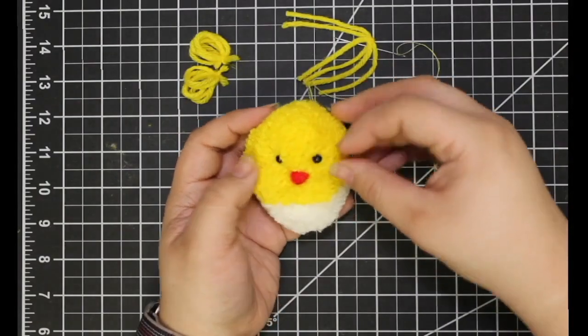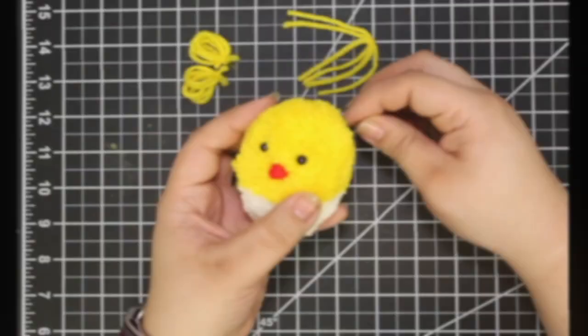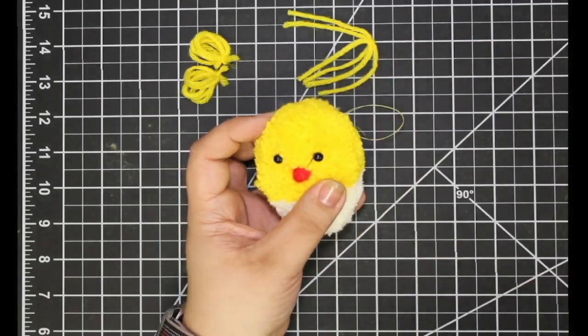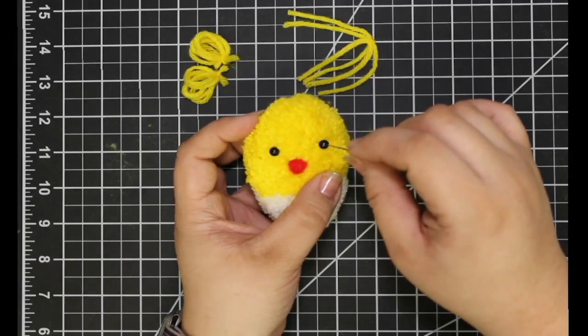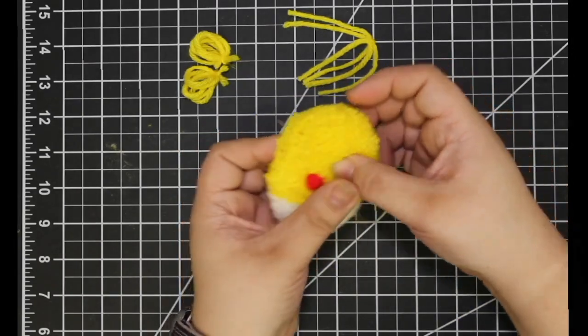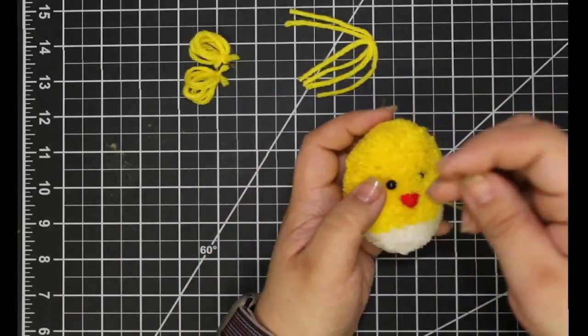Next, position where you will place the eyes. Thread the needle through the back, close to the same position where the eye is located on the front. Thread the bead through the needle and then push the needle back through. Repeat this process for the other eye.